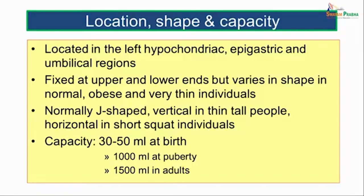The capacity of the stomach varies between 30 ml to 50 ml in a newborn child, whereas at puberty it is about 1000 ml, and in adults it is about 1500 ml.